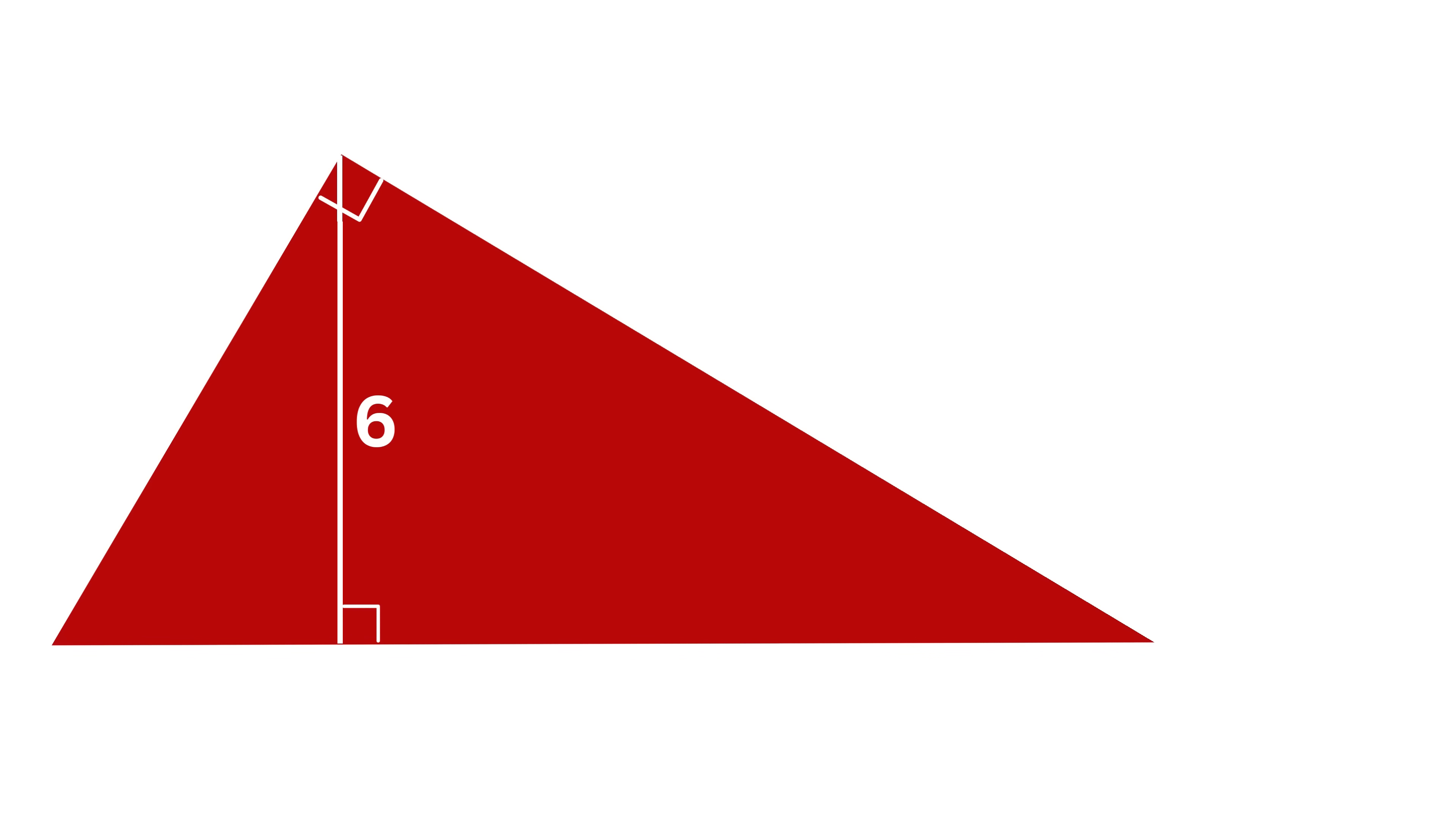We have a right triangle whose height is 6 units and hypotenuse is 10 units. We need to find the area of this triangle.